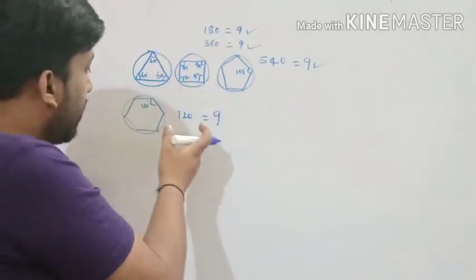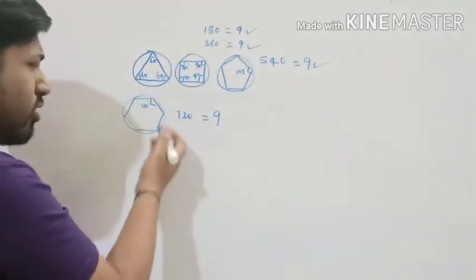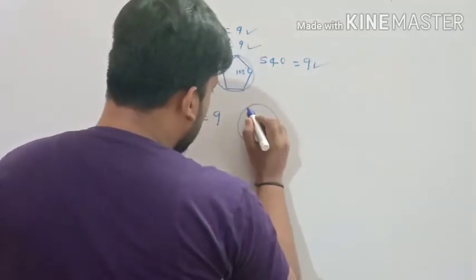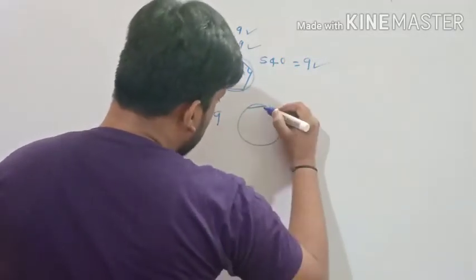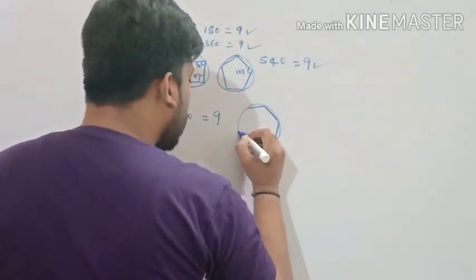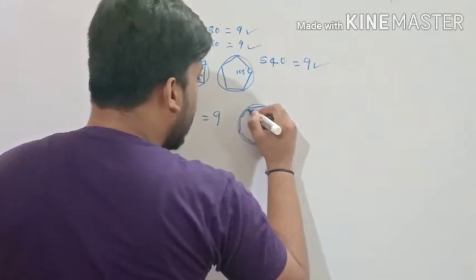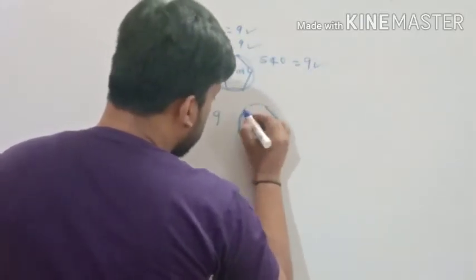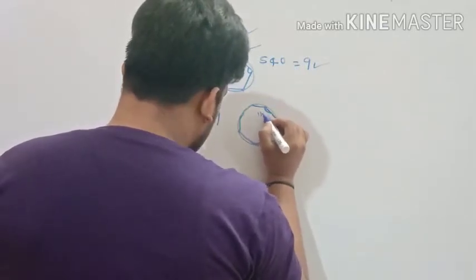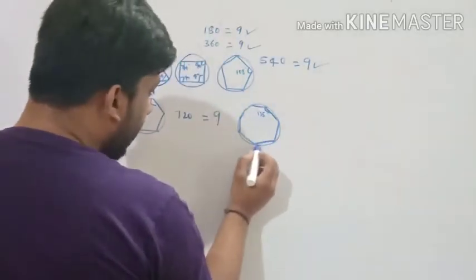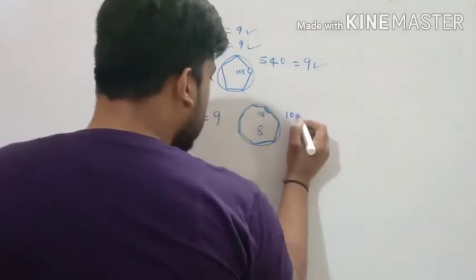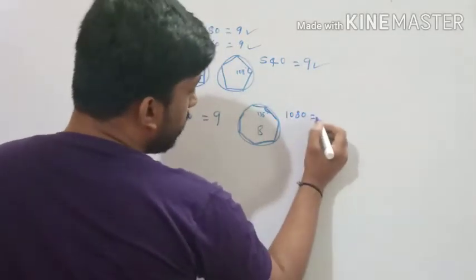Whatever polygon we consider — similarly, let's take an octagon with 8 sides and 8 angles. The internal angle of a regular octagon is 135 degrees. So 135×8 = 1080. Add the digits: 1+0+8+0 = 9. How fantastic and phenomenal! Whatever polygon you take — nonagon, decagon, any polygon — the digit sum of the total interior angle sum always comes back to 9.